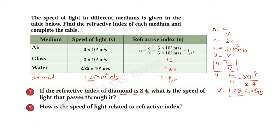How is the speed of light related to refractive index? Speed of light is less in a medium of higher refractive index. A higher refractive index medium like diamond means the speed of light is smaller. Speed of light is more in a medium of lower refractive index — lower refractive index means higher speed.